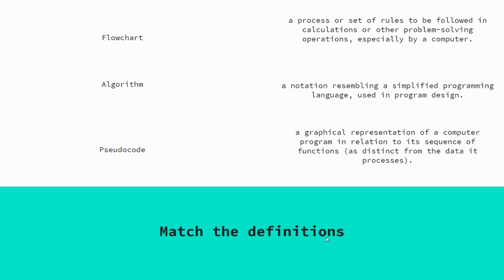So a quick starter activity: you've got three key terms on the left — you may have heard of some of these — and on the right hand side you've got three definitions. Think about whether you want to number them: flowchart being one, algorithm being two, and pseudocode being three.